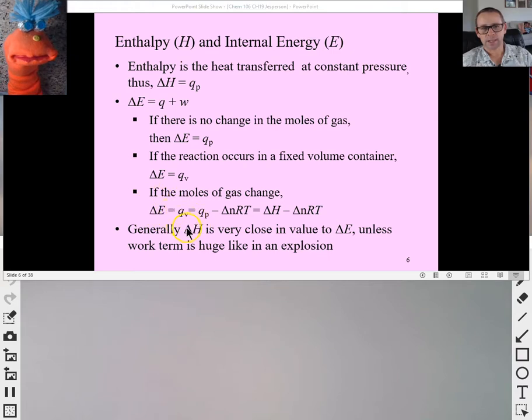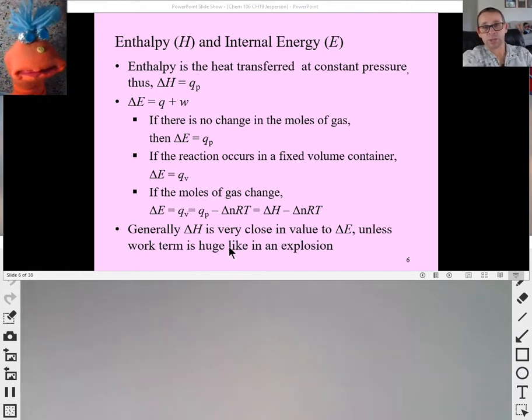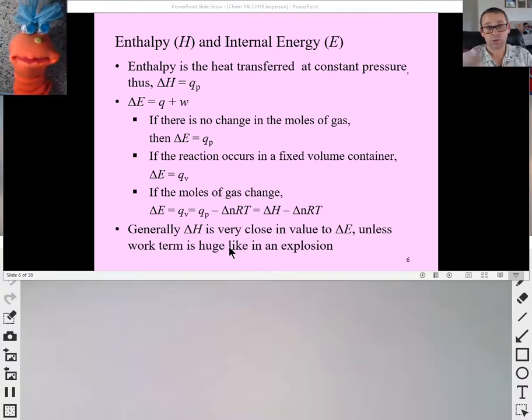So usually delta E and delta H are very close unless there's a strong change in work, trying to change in moles of gas. And that's an example of something like an explosion. Right, so where you have a lot of moles of gas being created, and that's what causes explosions, right? When the number of moles of gas that are created have no space as they're formed, they need to push everything out of the way very rapidly. That's a rapid form of gas, an explosion.